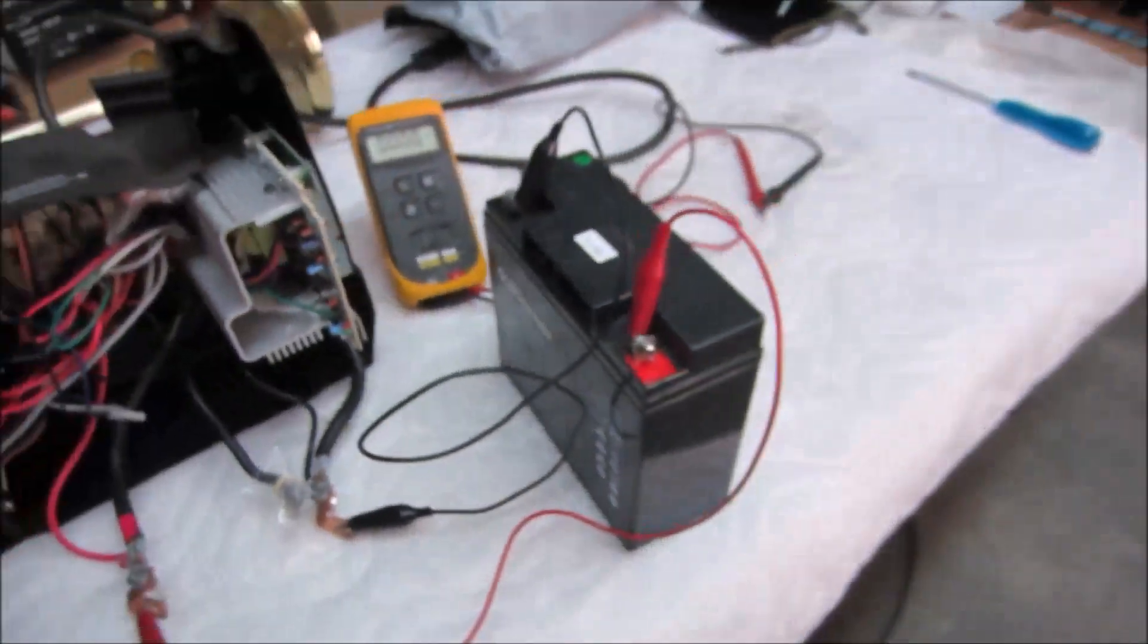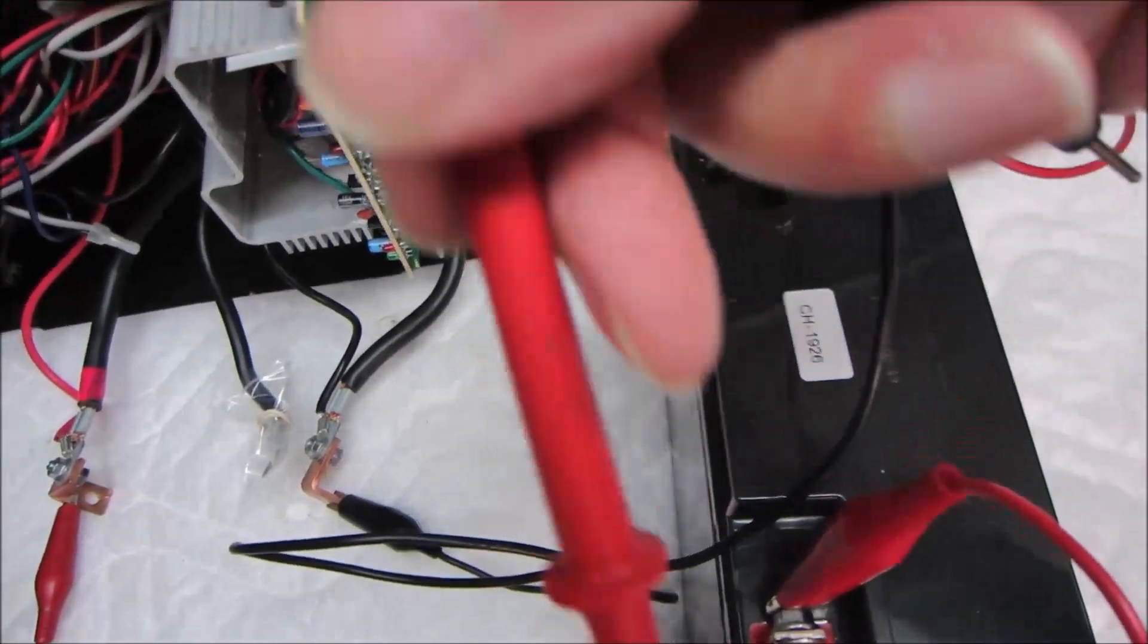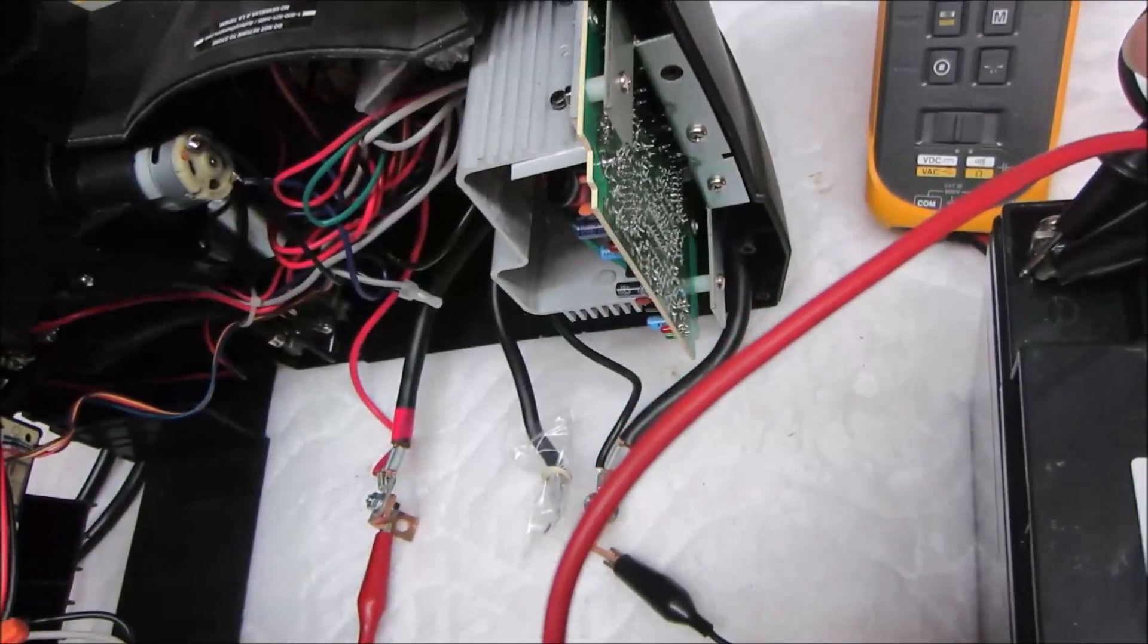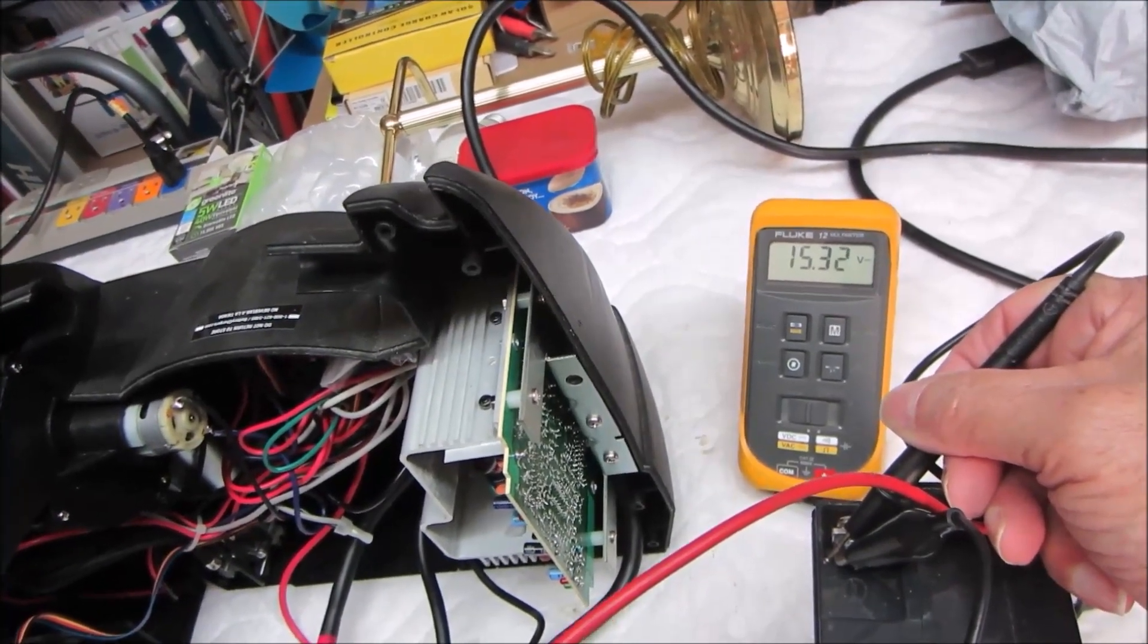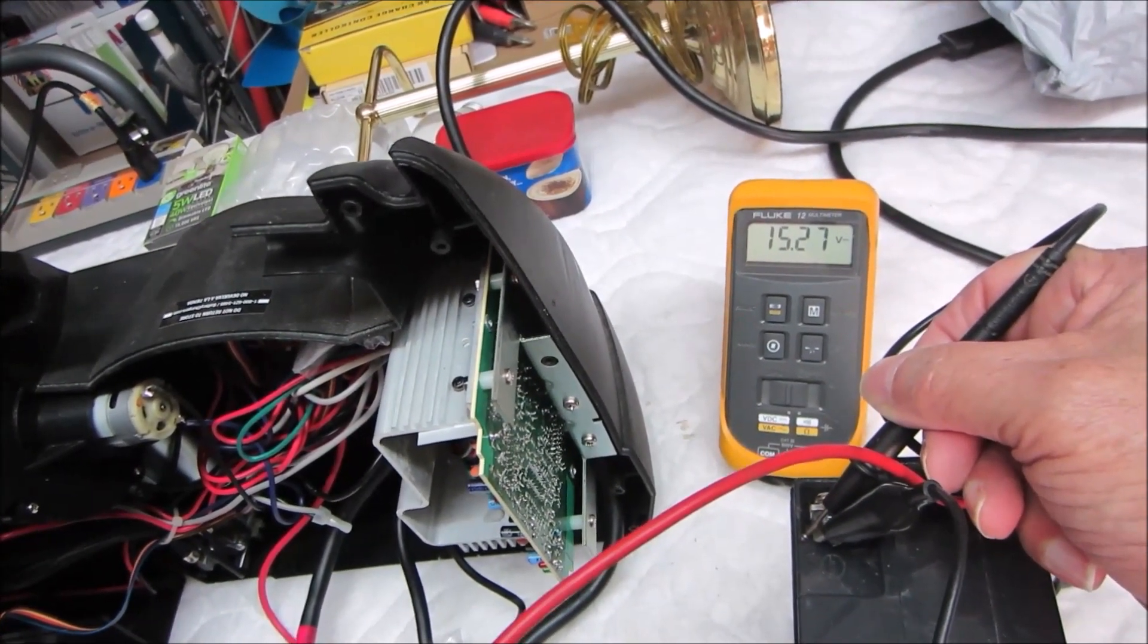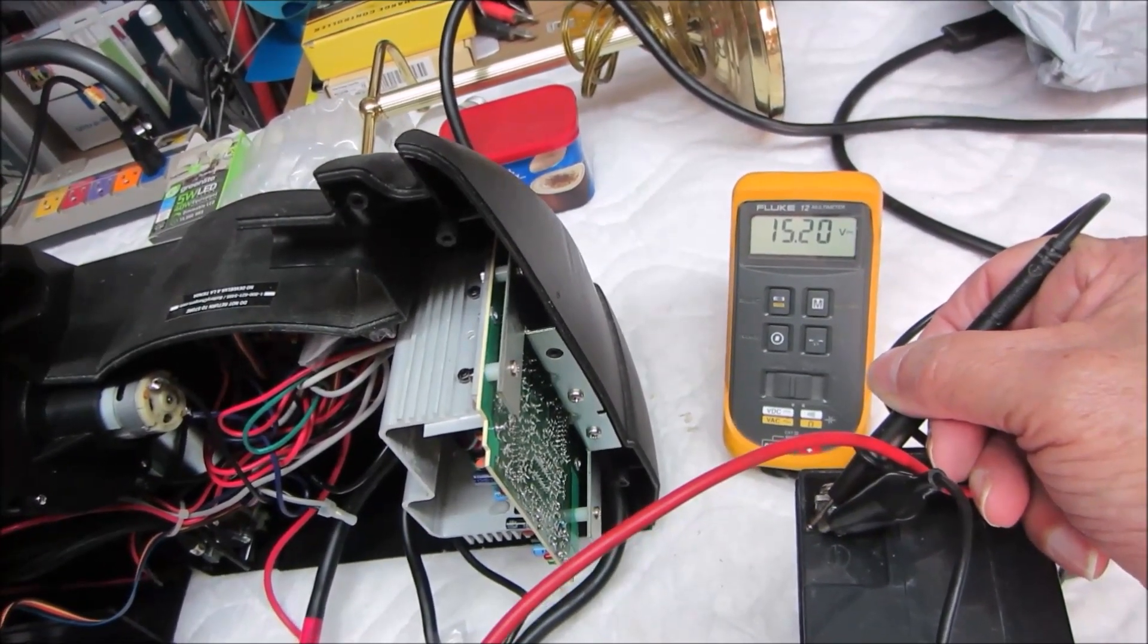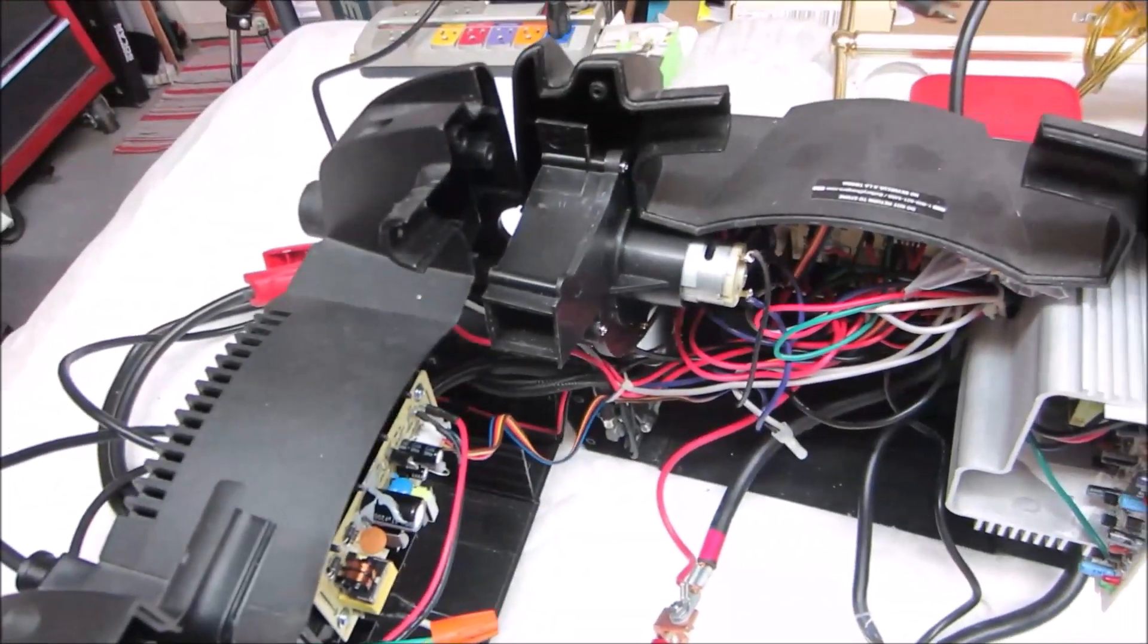Now what's our charge voltage? Alright, we'll put these probes back across the battery. 15.31 volts. So we jump from 13 whatever we had to over 15 volts and that's your normal charge voltage. 15 volts. Okay, that's what we're supposed to get but you're not getting that.